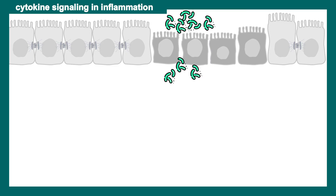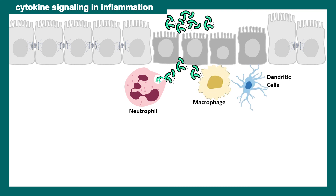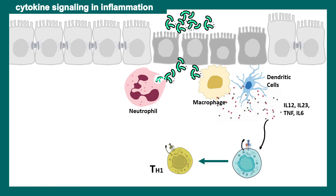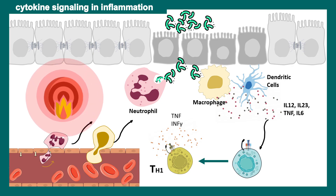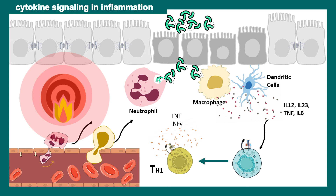Let's put cytokine signaling into context. When pathogenic bacteria invade the body, neutrophils, macrophages, and dendritic cells reach the site and trigger an inflammatory response, secreting IL-12, IL-23, TNF, and IL-6. This promotes TH1 differentiation, which further secretes TNF-alpha and interferon gamma. This milieu of pro-inflammatory cytokines evokes a potent inflammatory response and attracts more neutrophils and monocytes to the site of infection.